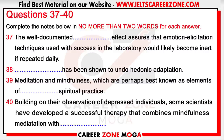Meditation and mindfulness, which are perhaps best known as elements of Buddhist spiritual practice, have also proven to be fruitful topics within empirical research on well-being. For instance, for more than two decades, Kabat-Zinn and colleagues have reported evidence that meditation helps people self-regulate stress, anxiety, chronic pain, and various illnesses. Building on the observation that when formerly depressed individuals see their thoughts and emotions from a wider perspective, they are more resistant to relapse, some scientists have developed a successful therapy that combines mindfulness meditation with cognitive therapy. You have half a minute to check your answers.